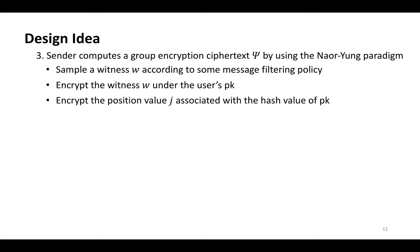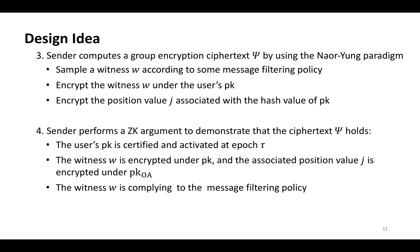This is the encryption process. The sender samples a witness w according to some message filtering policy. Then, it encrypts the witness w under the user public key and encrypts the position value under the opening authority's public key. In this encryption, to achieve CCA security, the linear hash paradigm is also utilized. Finally, the sender performs a zero-knowledge argument to demonstrate that the ciphertext is satisfying the following: The user public key is certified and activated at epoch τ. The witness w is encrypted under this public key and the opening authority's position value j is encrypted under the opening authority public key. Finally, the witness w is compliant to the message filtering policy.